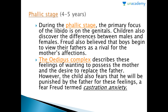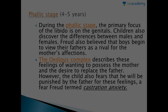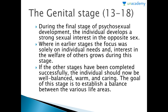After the phallic stage comes the latent period, in which no activity is seen — it is the period between the phallic stage and the genital stage. The last stage is the genital stage, seen in 13 to 18 years of age. During this final stage, the individual develops a strong sexual interest in the opposite sex, and interest in the welfare of others grows. If the other stages have been completed successfully, the individual should now be well-balanced, warm, and caring. The goal of this stage is to establish a balance between the various life areas.